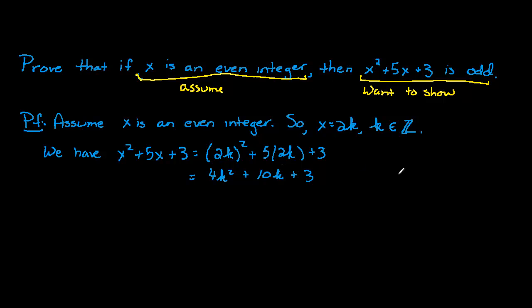Okay. So let's just recall over here for a moment. Even integers are of the form 2k. Odd integers are of the form 2k plus 1, or 2j plus 1—doesn't matter what you call that.